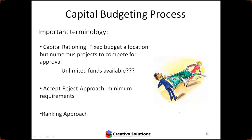So if I'm looking at the process, we've got a note about capital rationing. Capital rationing looks at allocating funds that are limited. So when I have limited resources, I need to allocate — I need to budget. When budgeting for certain projects, there needs to be an accept or reject approach in terms of minimum requirements.